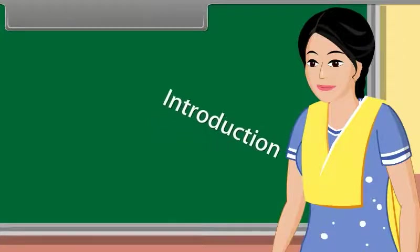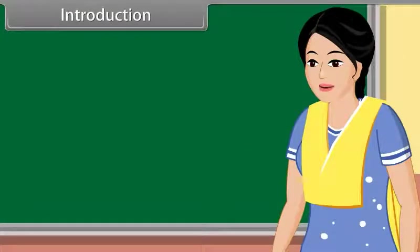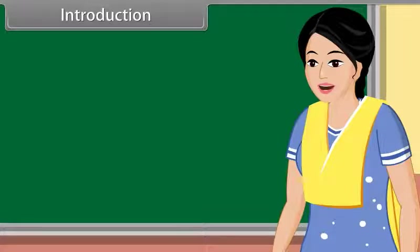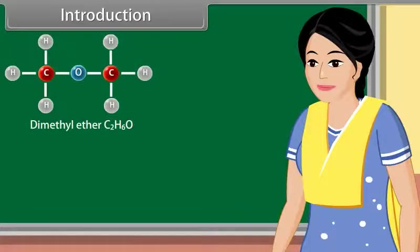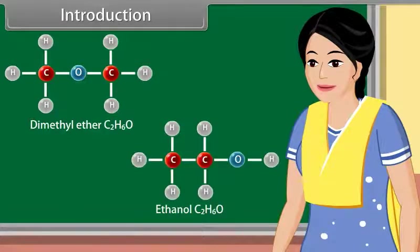Today we learn isomers and concepts used in organic reaction mechanisms. The organic compounds which have the same molecular formula but different configurations are called isomers. Examples of isomers are dimethyl ether and ethanol — they have the same molecular formula but different configurations.